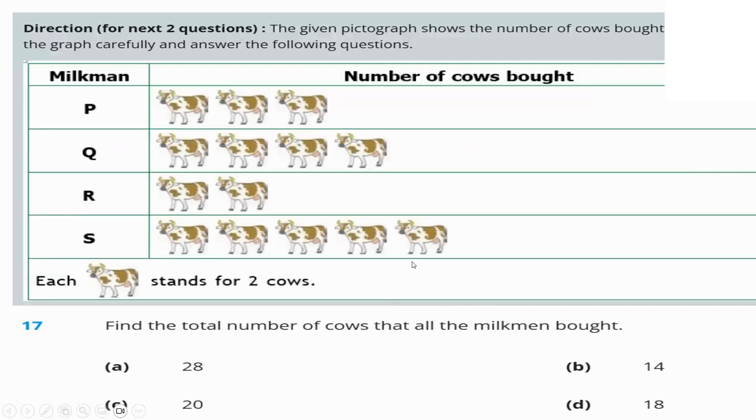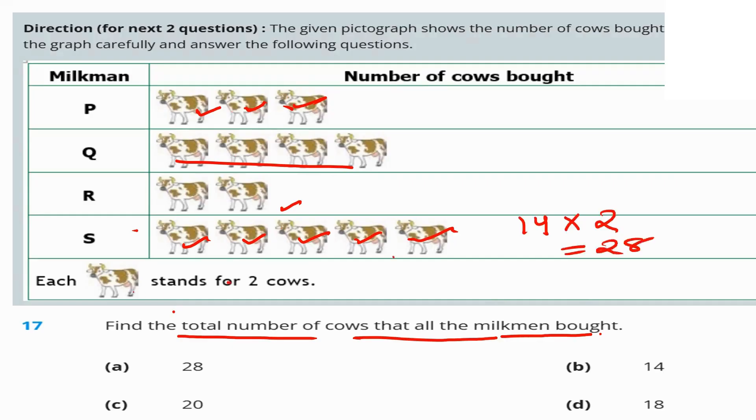Next, this is the pictograph for the next upcoming two questions. So, the first question. Find the total number of cows that all the milkmen bought. What's the total number of pictures? One, two, three. Three plus four, seven plus two. Nine. Nine plus one, two, three, four and five. Nine plus five, that's fourteen. Fourteen two times is twenty-eight. Why two times? Because each picture stands for two cows. So, twenty-eight. Option C is the answer.